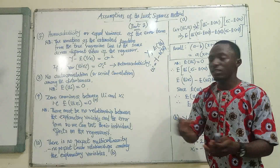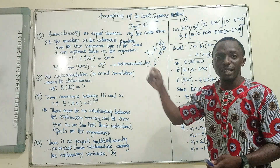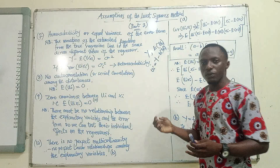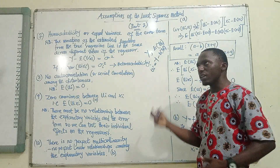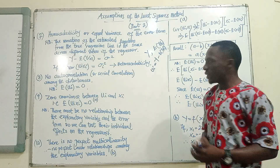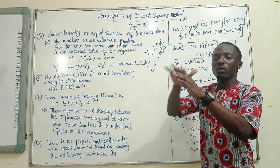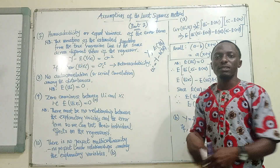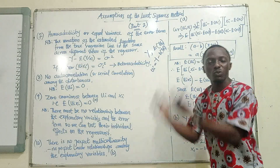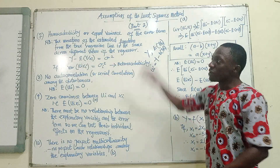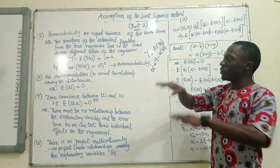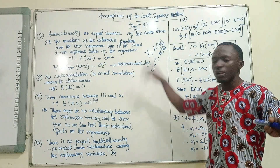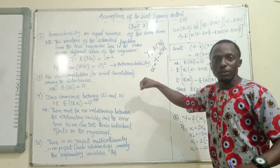For example, consider the income and consumption question. When household income is around $1,000, the Ui must be the same even when household income is $1,500, $2,000, or $2,500. So that is the assumption of homoscedasticity: there must be equal variance of the error term across all observations of the independent variable, the regressor in question.